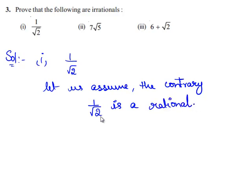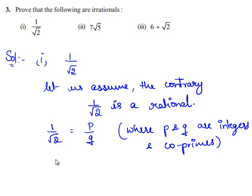Since we have assumed that 1 by root 2 is a rational number, 1 by root 2 can be written in the form of p upon q where p and q are integers and also co-primes. This implies root 2 is equal to q upon p.